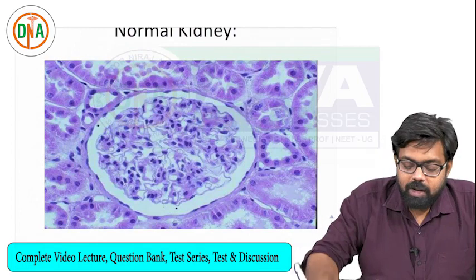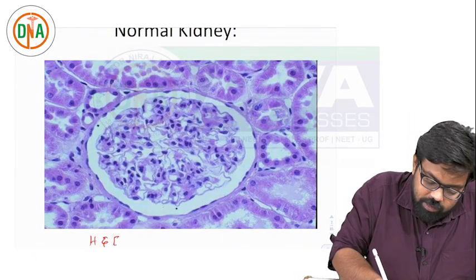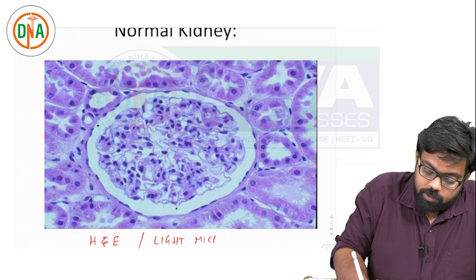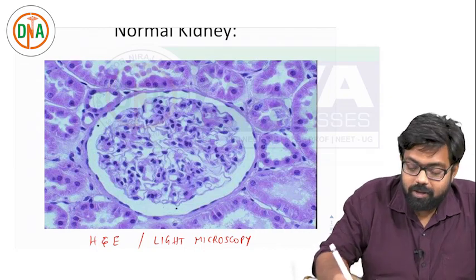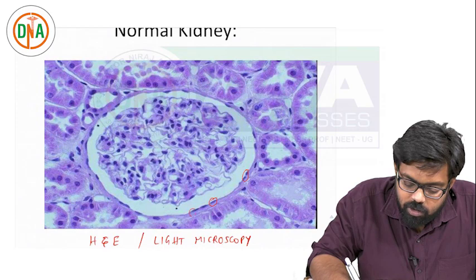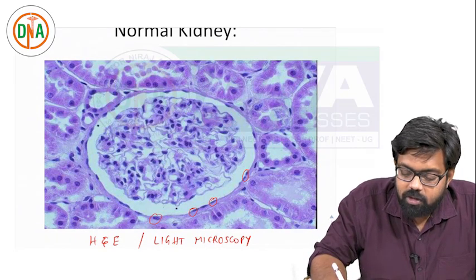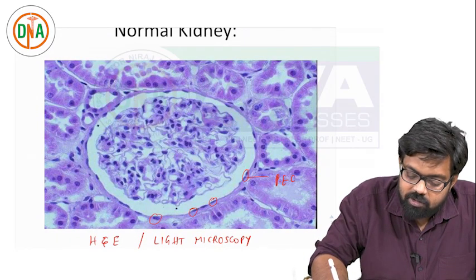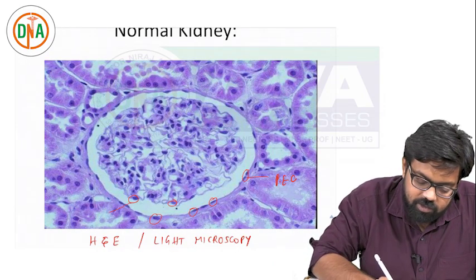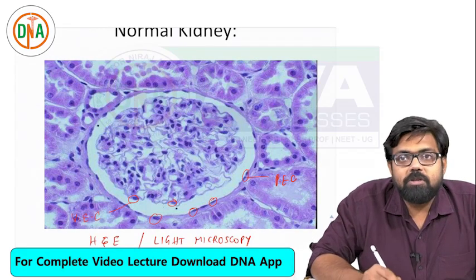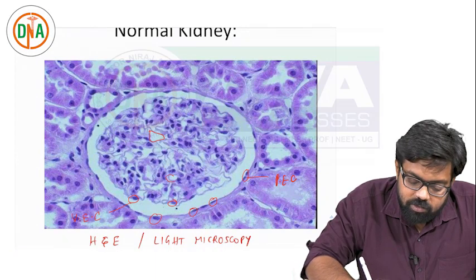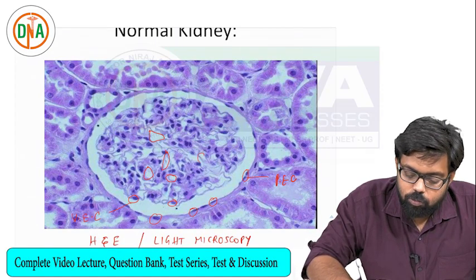What you are looking at is a normal H&E on light microscopy. This is a normal kidney. These are the parietal epithelial cells - these are the nuclei of the parietal epithelial cells. This is the nucleus of the visceral epithelial cells. The foot processes are not visible on light microscopy. And these are the glomerular capillary lumens.